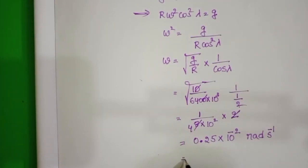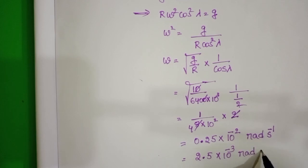That is equals to 2.5 into 10 power minus 3 radian per second.